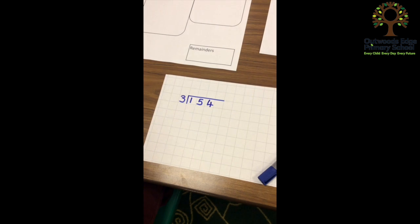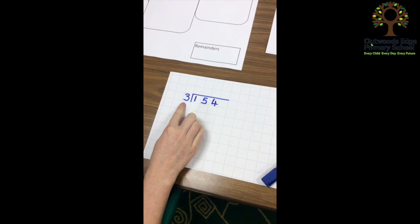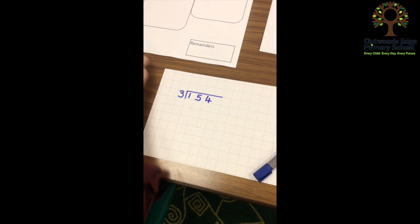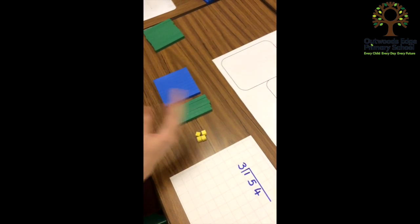Okay, so this time we're looking at exchanging and remainders within short division. We're looking at 154 divided by 3, so I've made my number, I've got 154, and I'm going to go through